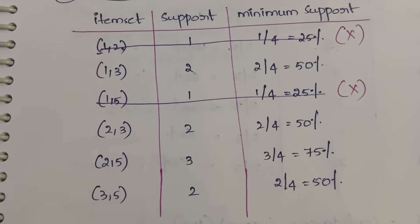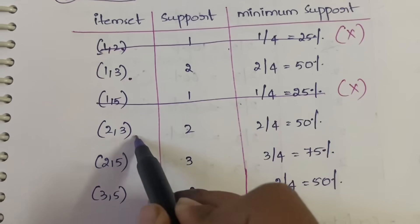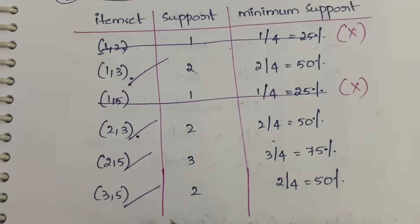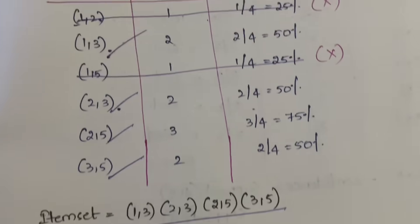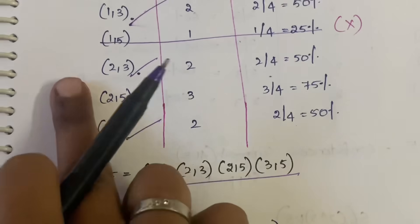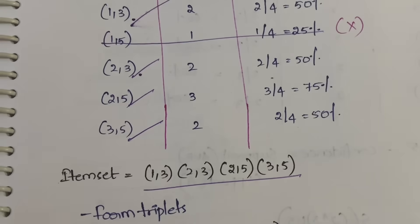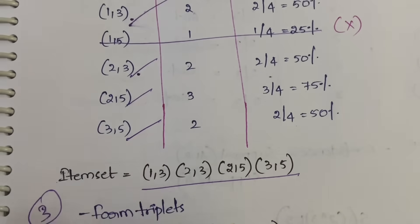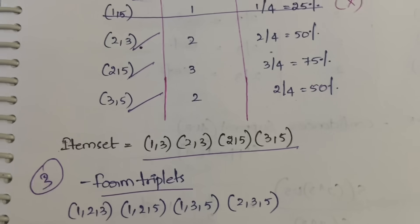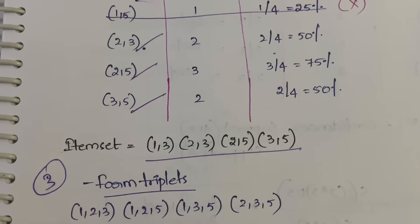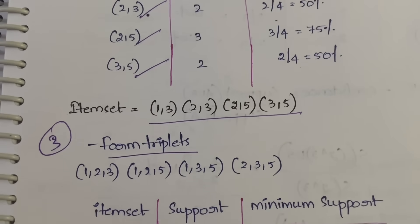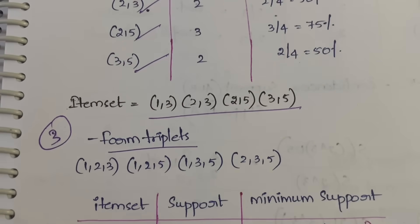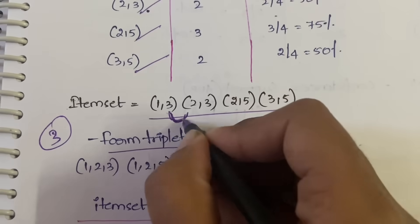The new item set of ordered pairs is: {(1,3), (2,3), (2,5), (3,5)}. In the third step, we form triplets — that is, 3-item combinations — from these surviving pairs.